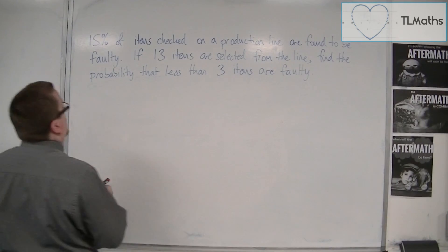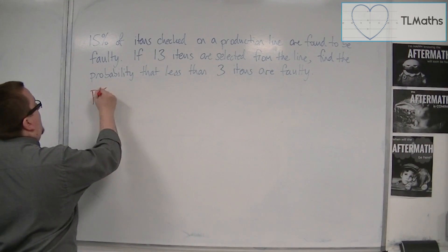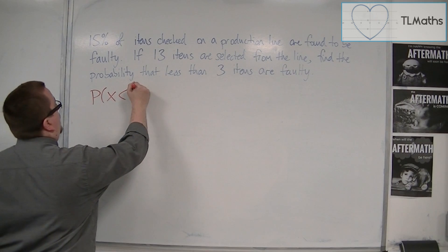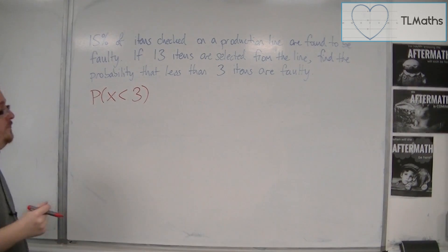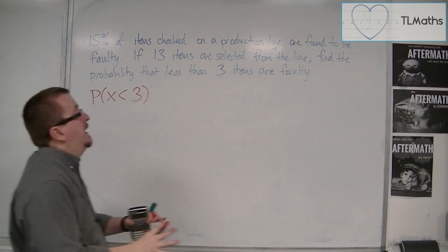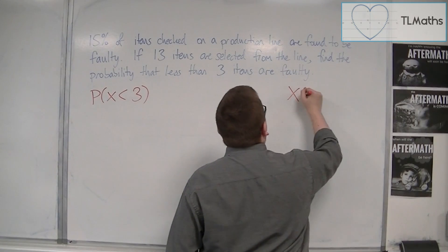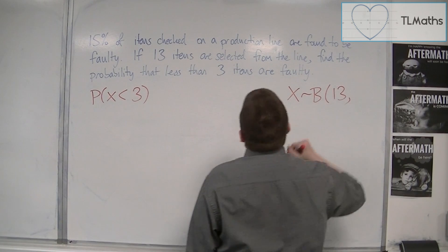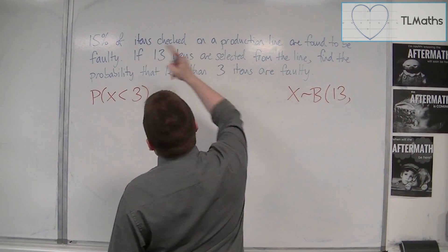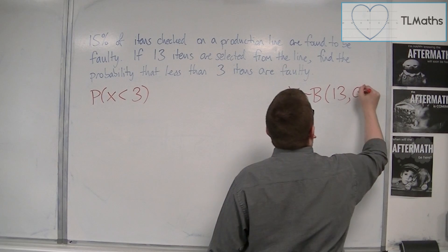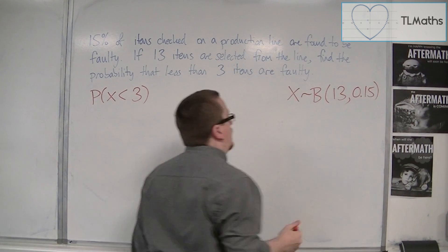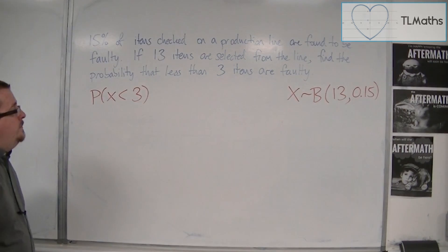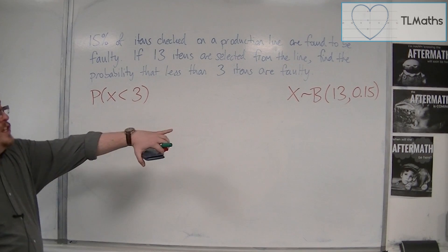So we want the probability of X being less than 3. What we have here is a binomial distribution. So X is binomially distributed with n equals 13 and a probability of being faulty of 15%, so 0.15. So that's the distribution.